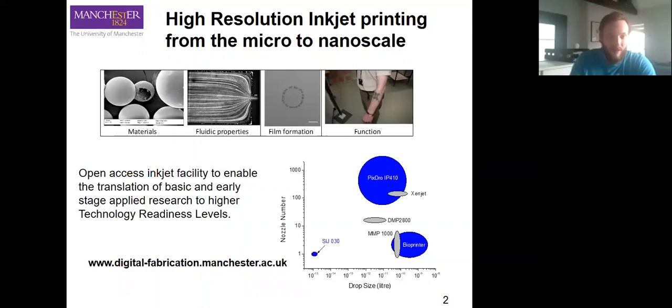A lot of the fabrication technologies we have range from very small, such as the super inkjet which has a single nozzle and an incredibly small drop size for very precise placement, all the way up to large scale, large area printers comparable with industrial scale up.